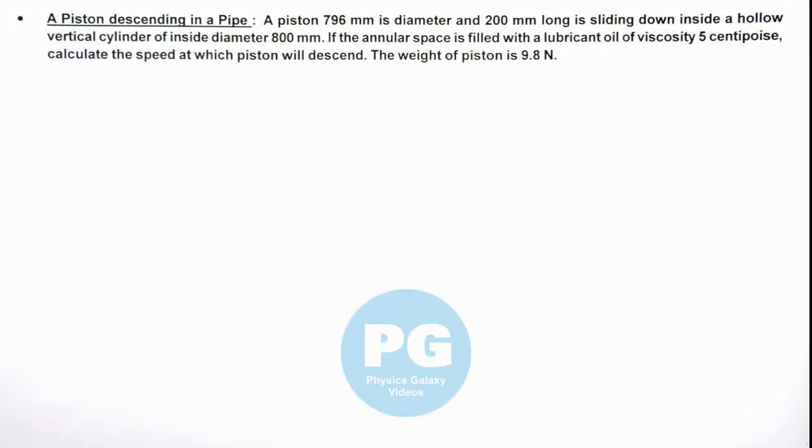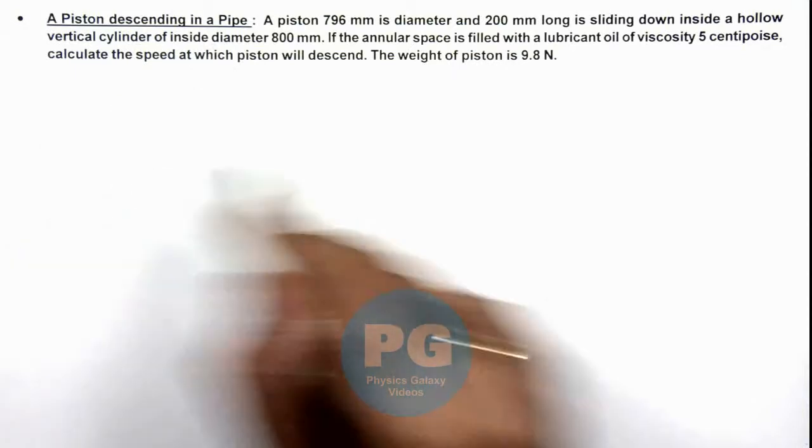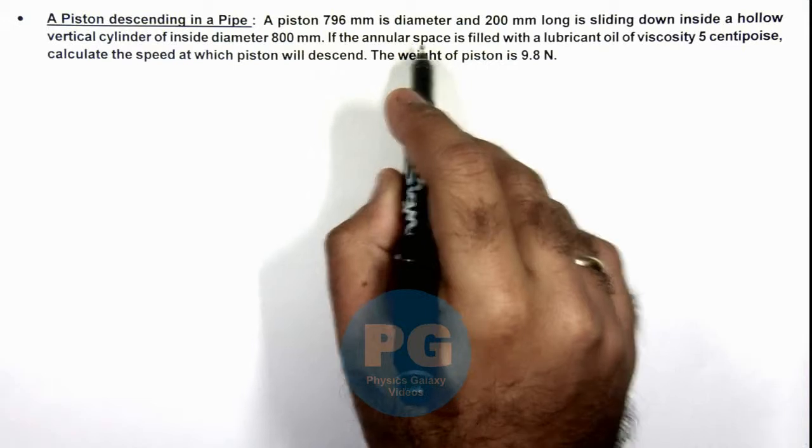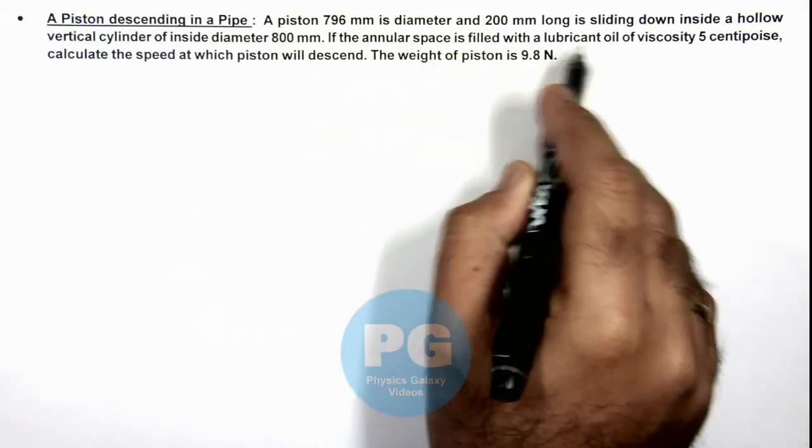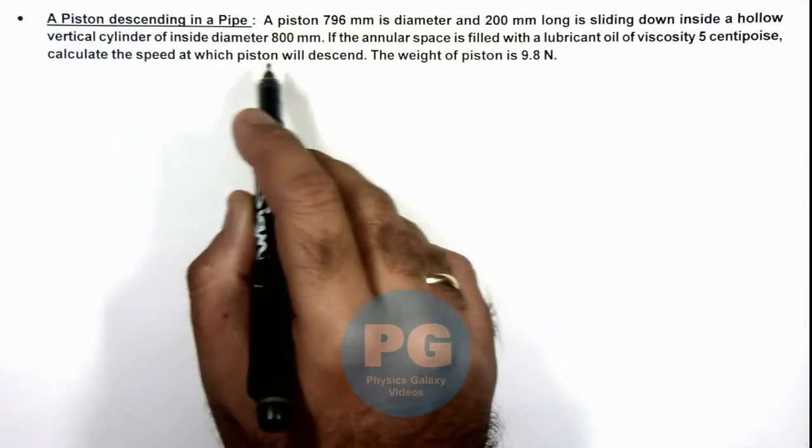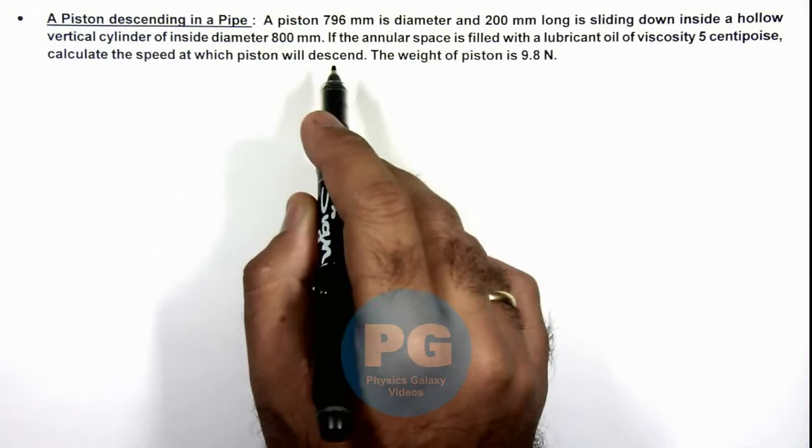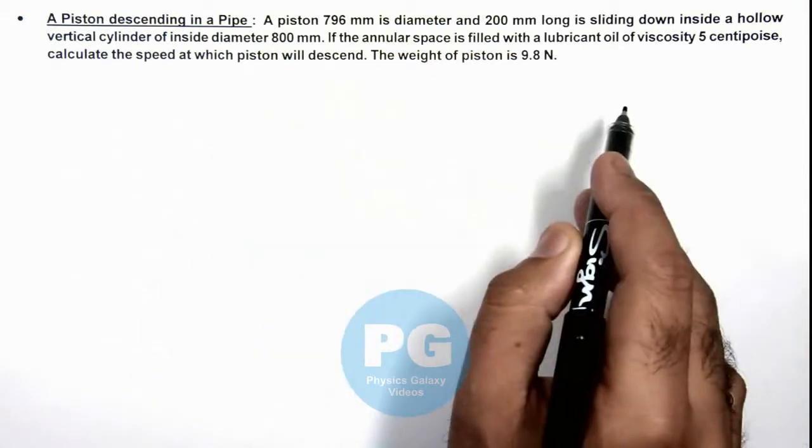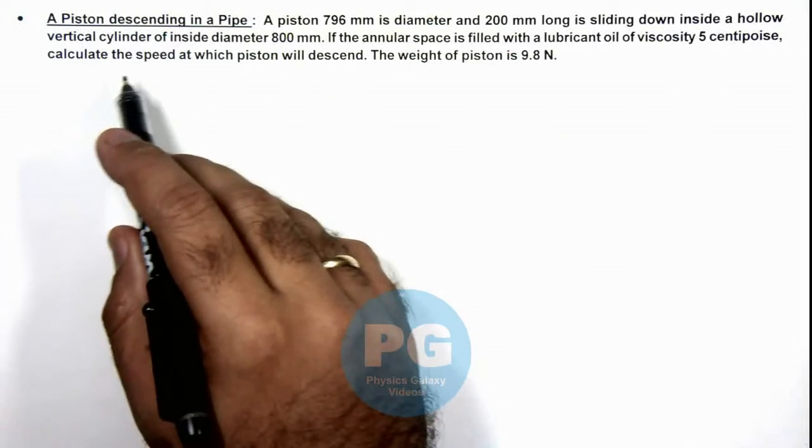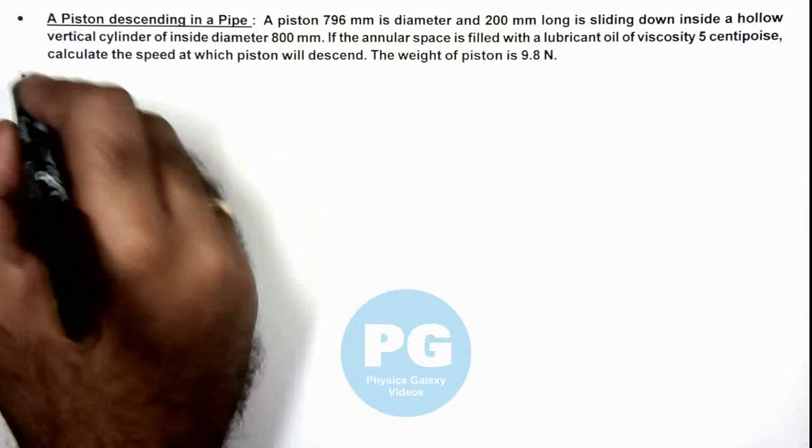In this illustration, we'll discuss about a piston descending in a pipe. We are given that a piston of 796 mm in diameter and 200 mm long is sliding down inside a hollow vertical cylinder of inside diameter 800 mm. If the annular space is filled with a lubricant oil of viscosity 5 centipoise, we are required to calculate the speed at which piston will descend. The weight of piston is also given to us.